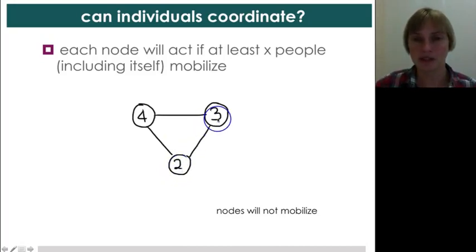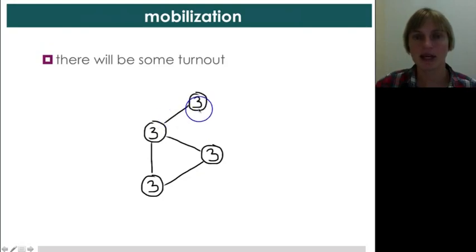But now, this one isn't going because this one isn't going, and so nobody goes and, you know, no one goes out and protests. In this network, on the other hand, you would get partial turnout. This node doesn't have a chance. It wants to coordinate with three other people, but it only has one friend. So, yeah, they're not going to go out. But, these three nodes each have this threshold of three, and they're all talking to each other, and hence, they'll all go and turn out.